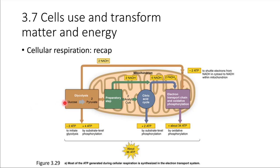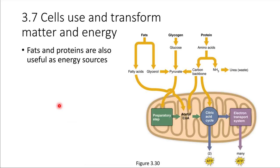What happens if glucose is not available inside a cell? Fats and proteins can also be broken down to get energy from them. If we start with fats, the fat gets broken down and enters the cycle at the acetyl-CoA stage, continuing through the citric acid cycle and electron transport system — bypassing glycolysis entirely. The same idea applies to proteins: breaking those down ultimately allows them to enter the citric acid cycle, as long as oxygen is present.